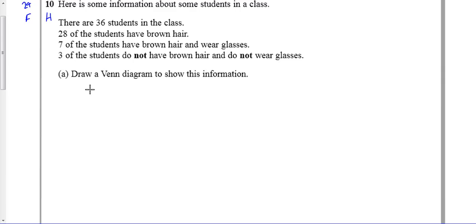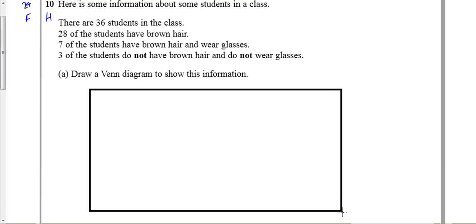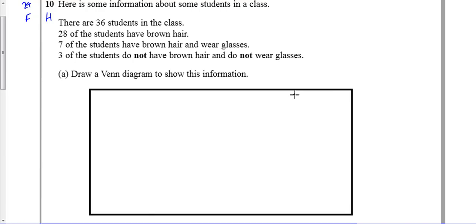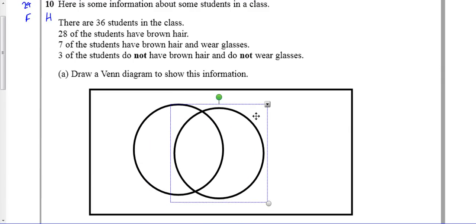So, it says we've got to draw a Venn diagram, so let's get our Venn diagram basics right. We need a big rectangle, and then we need two circles.